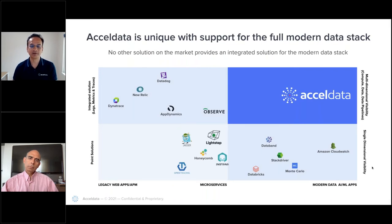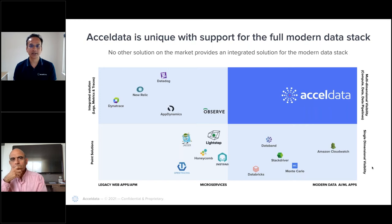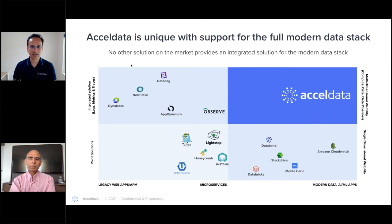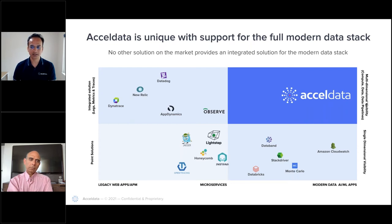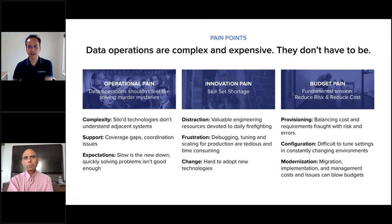We actually built this company in 2018. We figured out the whole world of open source and distributed technology is only going to grow. Enterprises will have to adopt to stay competitive and bring new use cases like recommendations and personalization. You needed something that gave you multi-dimensional visibility. Our key differentiation is multi-dimensional visibility across compute infrastructure, data pipelines, and data — all in one. If somebody uses Excel Data, they don't have to look for yet another solution to manage and operate their data systems. Key problems: operational pains, innovation pain, and budget pain.